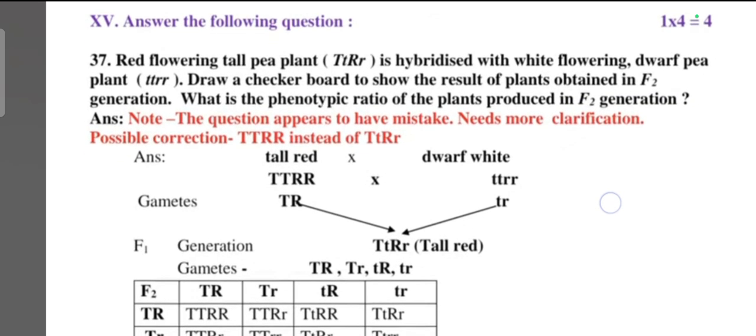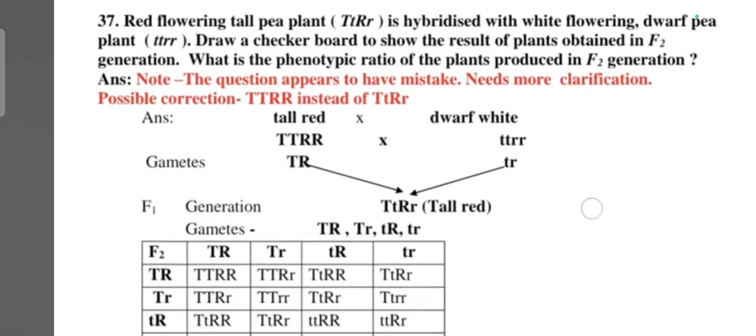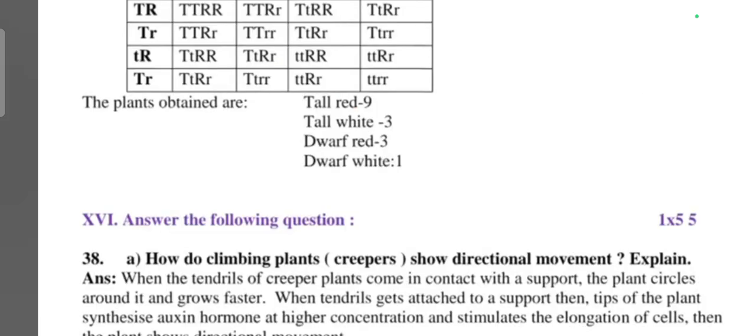Next question: red flowering tall pea plant is hybridized with white flowering dwarf pea plant. Draw a checkerboard to show the result of plant obtained in F2 generation. What is the phenotypic ratio of the plants produced in F2 generation? This is the checkerboard. Tall red: 9 plants, tall white: 3, dwarf red: 3, dwarf white: 1.